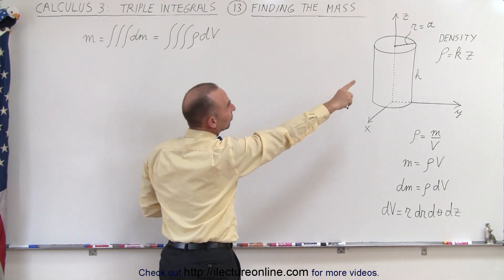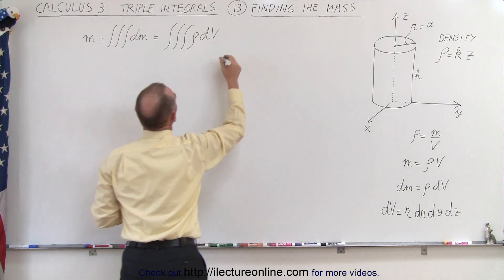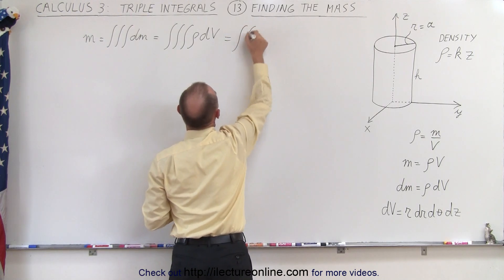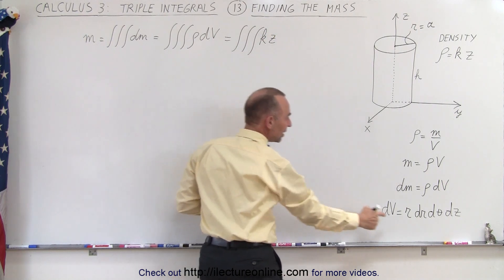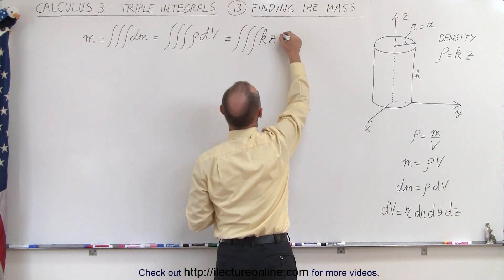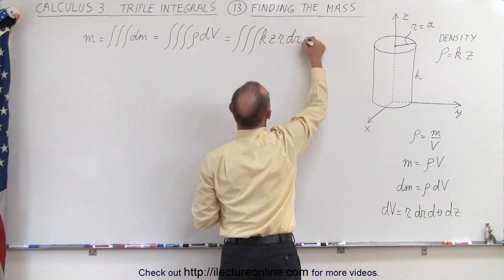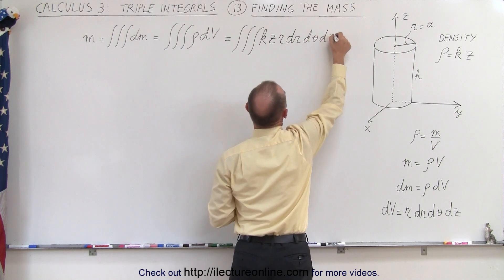The density is k times z, so this can be written as the triple integral of k times z times dV, and dV is r dr dθ dz.